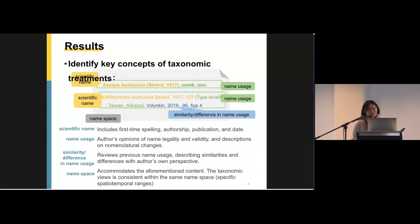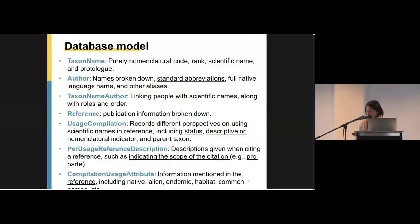Then the namespace accommodates the aforementioned content. The taxonomic views are consistent within the same namespace. Referring to specific spatiotemporal ranges as the description in the reference. Here are the main tables in the database model. Taxonomic names purely record information associated to scientific names. Objectively, without personal opinion.